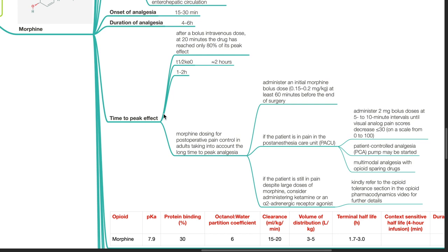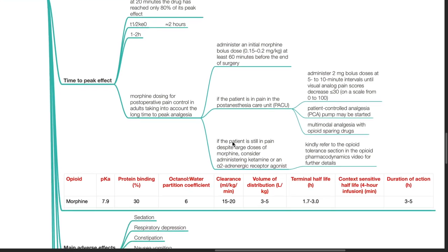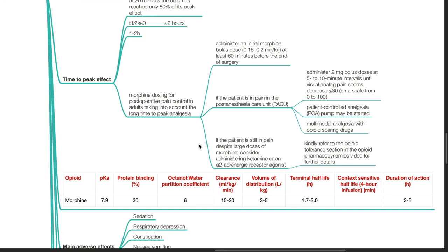If the patient is in pain in a post-anesthesia care unit, administer 2 mg bolus doses at 5 to 10 minute intervals until visual analog pain scores decrease to less than 30 on a scale from 0 to 100. Patient control analgesia pump may be started. Multimodal analgesia with opioid sparing drugs should be administered. If the patient is still in pain despite large doses of morphine, consider administering ketamine or an alpha-2 adrenergic receptor agonist.